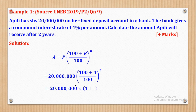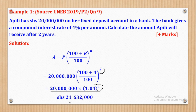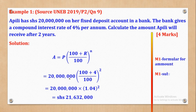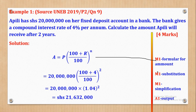When we simplify what is in brackets, we come up with 1.04 raised to power 2. When I simplify all of this, I come up with shillings 21,632,000. That is the amount she will receive after 2 years. For marking: M1 for quoting the formula correctly, M1 for substitution, M1 for simplifying, and A1 for the output.